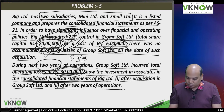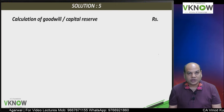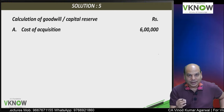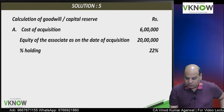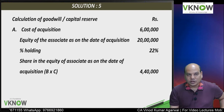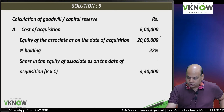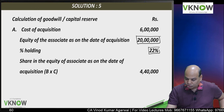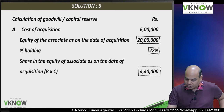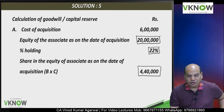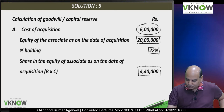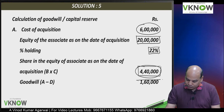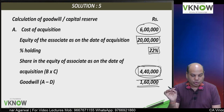First, calculation of goodwill. Comparing cost of acquisition 6 lakh with the share in net assets of the associate on the date of acquisition: the associate has only share capital of 20 lakh, no reserve. You have acquired 22 percent, so share in net asset is 4 lakh 40,000. Compare 6 lakh with 4 lakh 40,000 — goodwill is 1 lakh 60,000. We have to identify goodwill on the date of acquisition and disclose it separately.